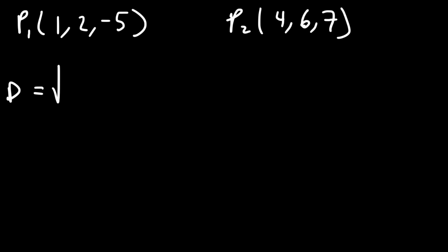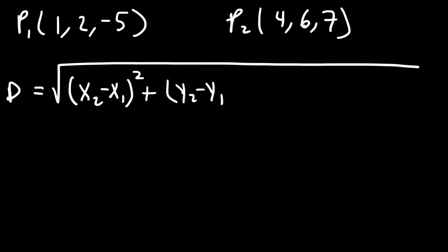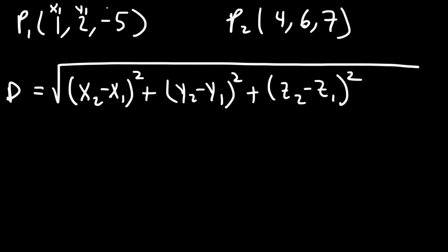The distance formula we're going to use takes the square of the difference between the x values, plus the square of the difference between the y values, plus the square of the difference between the z values, and then we take the square root of that entire result. So 1 is x1, 2 is y1, -5 is z1, and in the second point 4 is x2, 6 is y2, and 7 is z2.